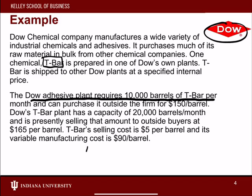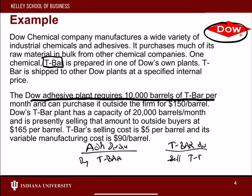So we have the adhesive division — they want to buy T-bar. And we have the T-bar division — they sell T-bar. The adhesive division currently buys it at $150 per barrel, and the T-bar division currently sells it at $165 per barrel. T-bar's costs per barrel are about $95 total.